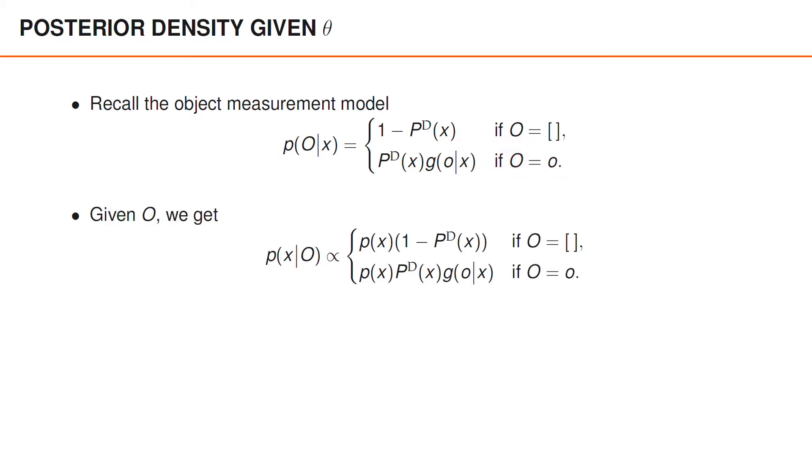It follows that the posterior of X given O is the prior p(x) times the above likelihood function. This means that the posterior takes the value p(x) times (1 - P^D(x)) if O is an empty matrix, and p(x) times P^D(x) times g(o|x) if the matrix O is the vector lowercase o.